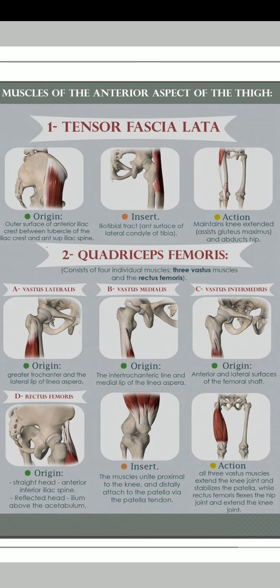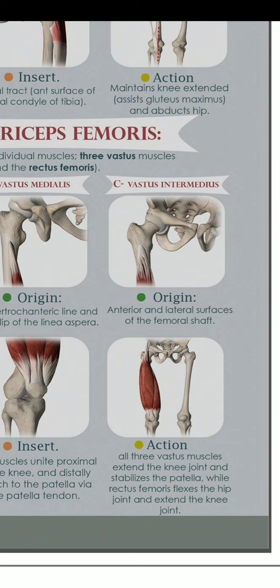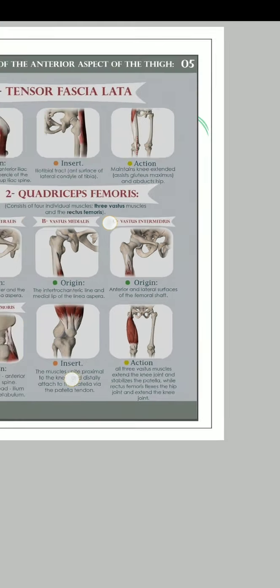If we talk about the insertion of these four muscles, they all unite proximal to the knee and are distally attached to the patella, while the patellar tendon attaches below. Regarding their actions: the three vastus muscles perform extension of the knee and stabilization of the patella. The rectus femoris performs flexion of the hip joint and extension of the knee joint.